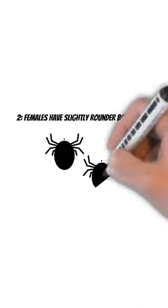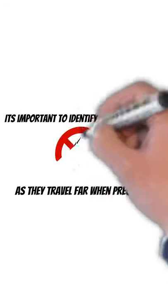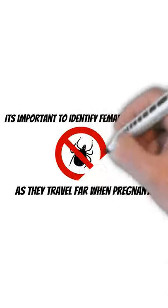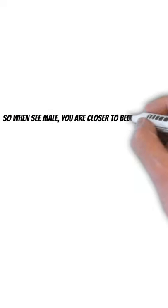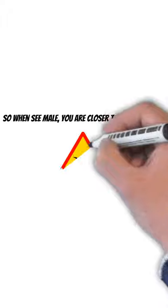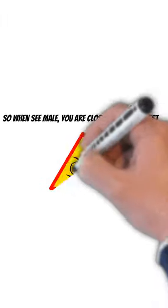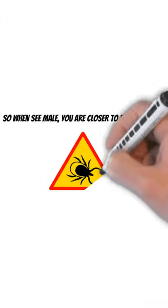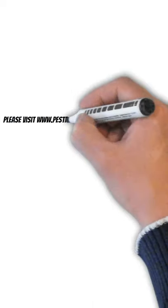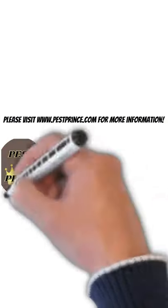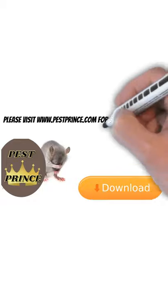This is easy to identify — males have more of a sharp shape, females are more round. Why is this important? It's important because females, when they get pregnant, travel far from the nest. So if you see a female, she may not be near the nest, making it harder to identify where to apply treatment. If you find a male with the sharper body, you're probably closer to the bed bug nest. Please visit pestprints for more dot com for more information.